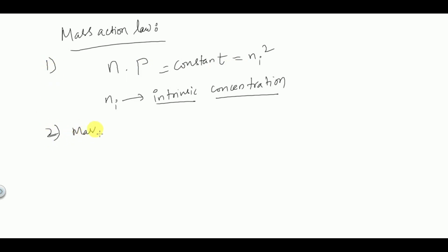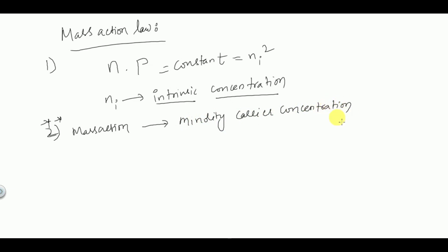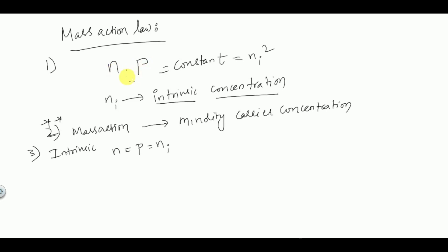Mass action law is generally used to find the minority carrier concentration present in a semiconductor. For the first case — the intrinsic semiconductor — we know that N equals P equals NI. So the total number of electrons equals the total number of holes, and both equal NI.